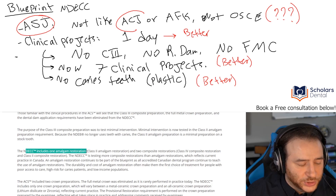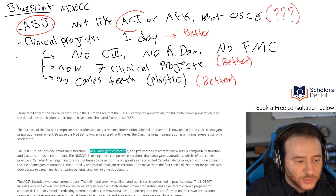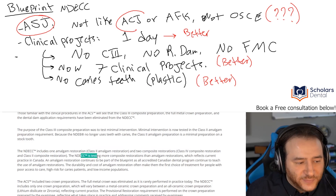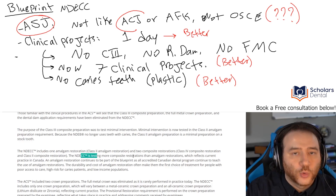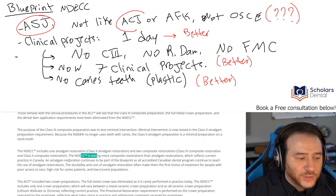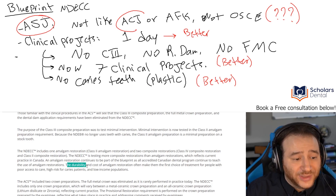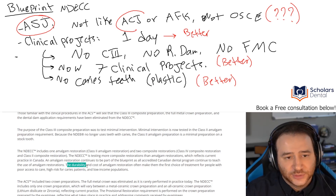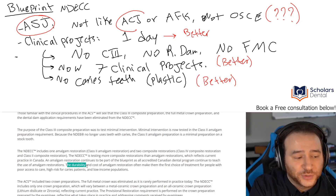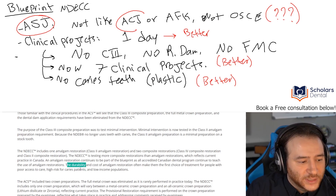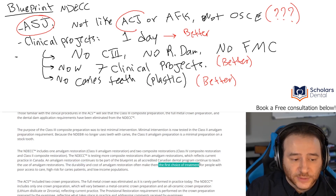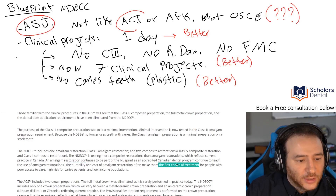The NDECC includes one amalgam restoration — the class two amalgam — and two composites: a class four and class two. They justify this because it represents how we actually practice in Canada, where we do more composites in general. They also keep the amalgam because it's a fundamental skill taught in universities and you may actually need to do it in clinics, especially since some patients prefer it as their first choice of treatment.